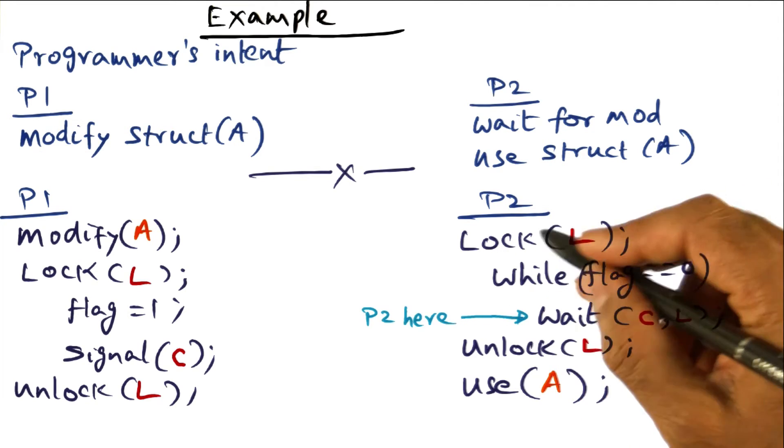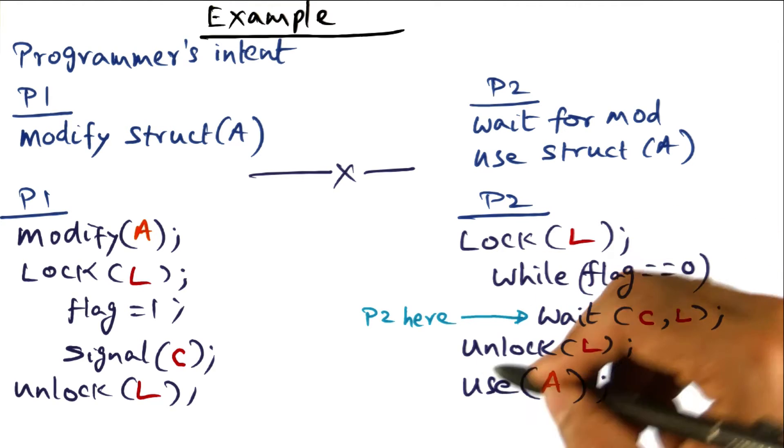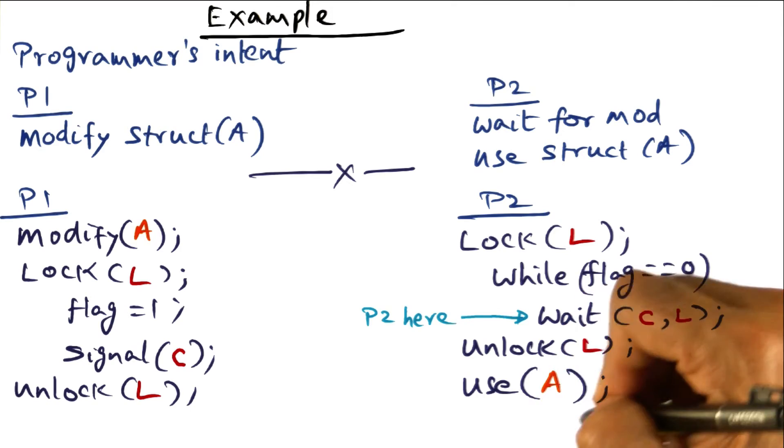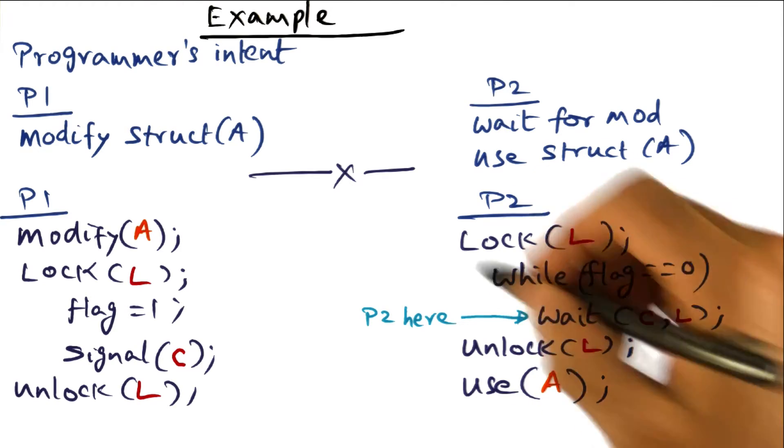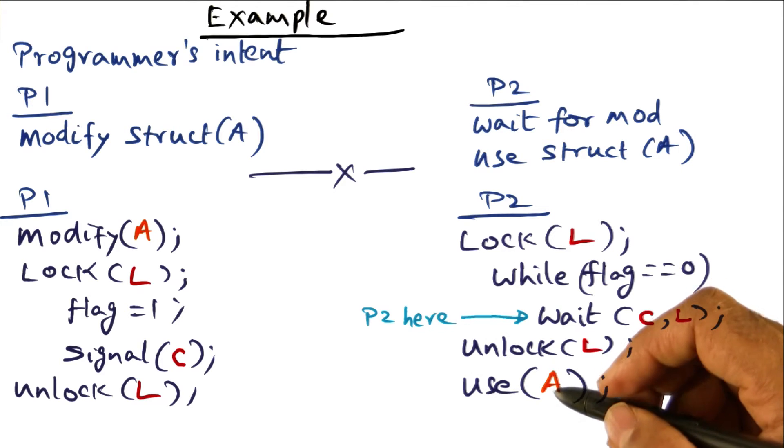So I'm now ready to get out of this critical section. I unlock L, come out of the critical section. Now I can use this modified data structure. So that's the semantic that I wanted, and I got that with this code fragment that I'm showing you here.